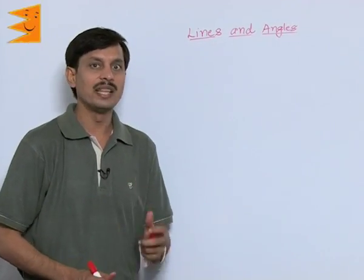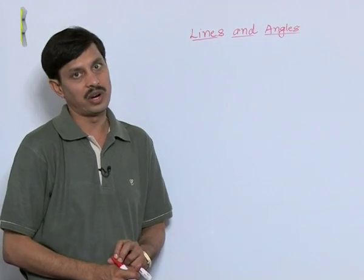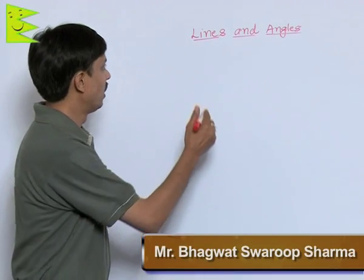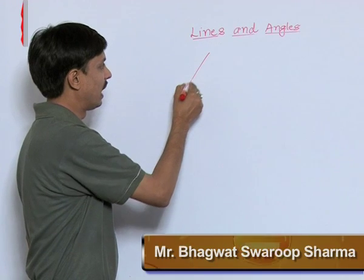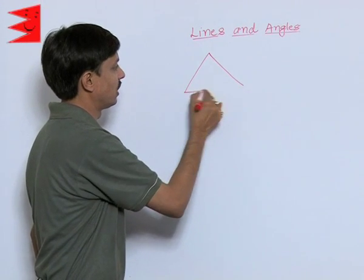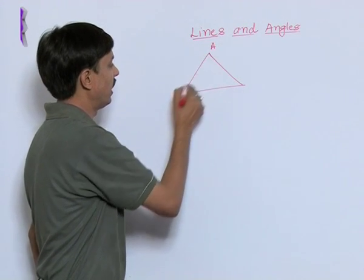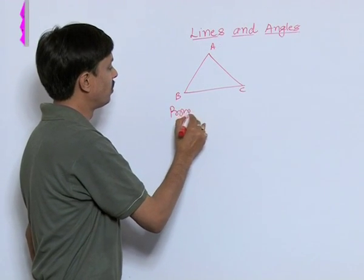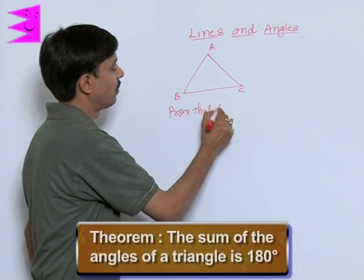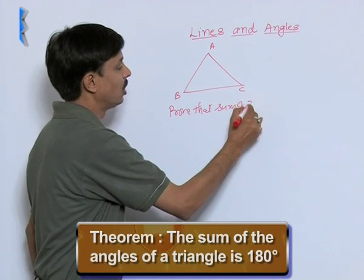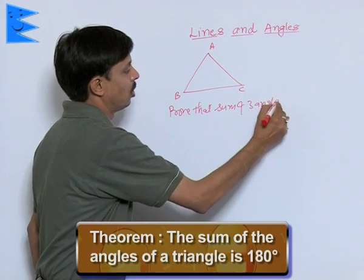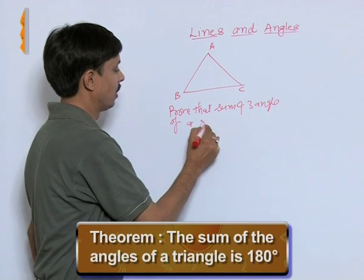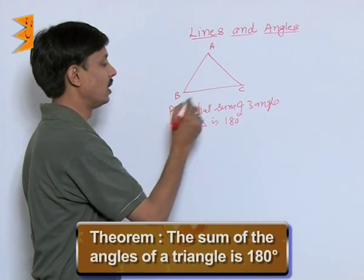Now, I want to tell you why the sum of three angles of a triangle is 180 degrees. First of all I am going to show you that there is a triangle labeled as ABC. The theorem is prove that sum of three angles of a triangle is 180 degrees.